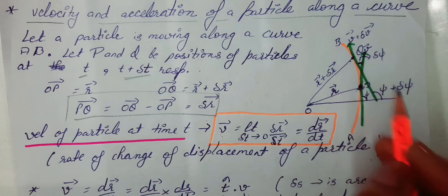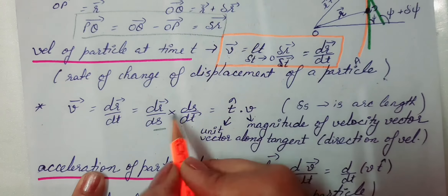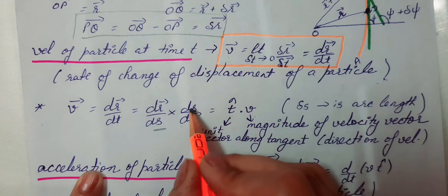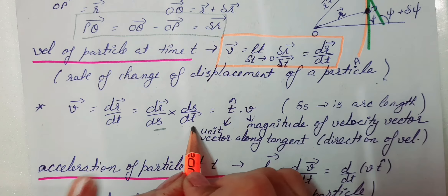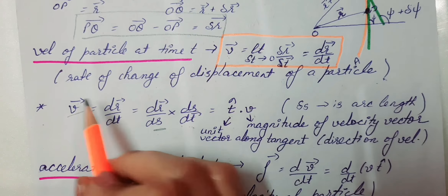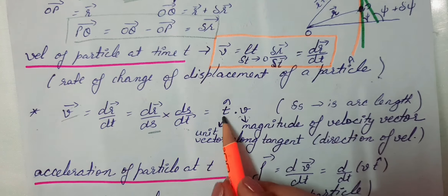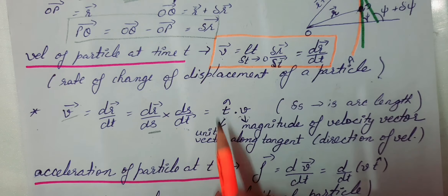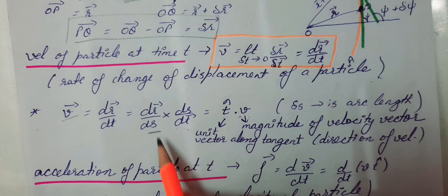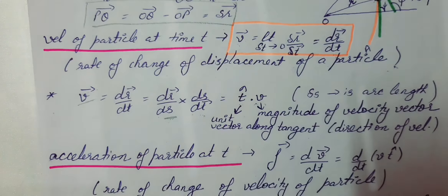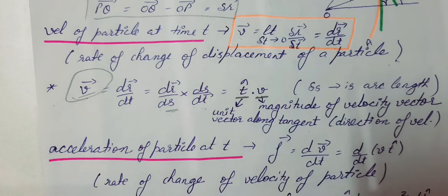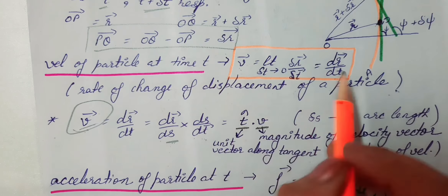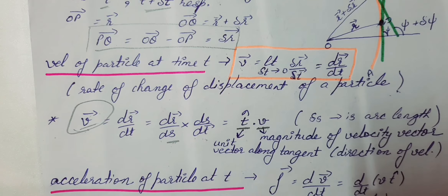जहाँ DS arc length है। PQ को arc length delta S मान लें तो DR by DS = T̂ (unit tangent vector) और DS by DT = V (magnitude of velocity vector). T̂ यानी DR by DS हमारे पास unit vector along the tangent होता है, और यह direction of velocity देता है। Hence velocity vector V = V · T̂, यानी magnitude और direction form में लिखा। यह velocity का formula in vector form complete हुआ।